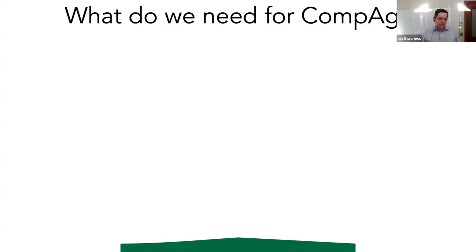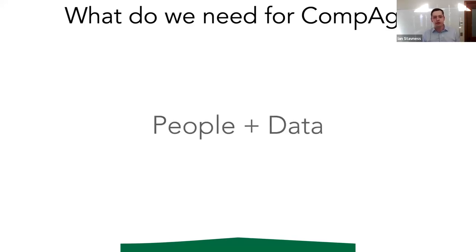So what do we need? We have great opportunity here — lots of great companies and great researchers. If you really want to push forward and grow computational agriculture, I'd argue there are really two main things: we need great people and we need great data. I'll focus on these two ingredients in the talk today.